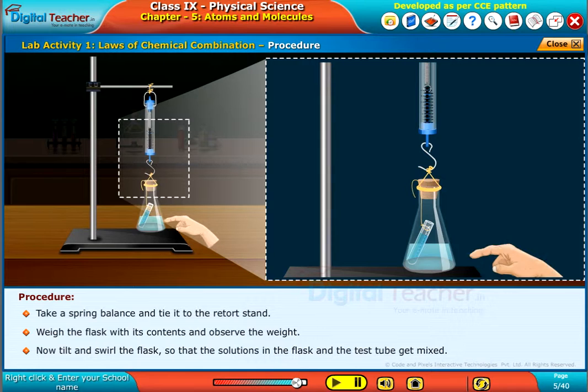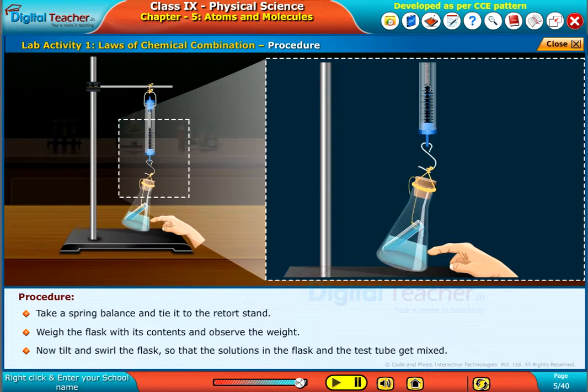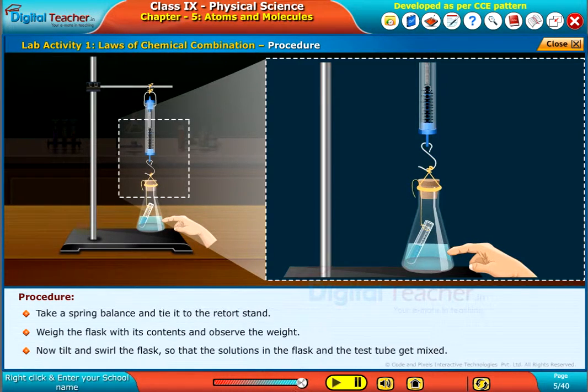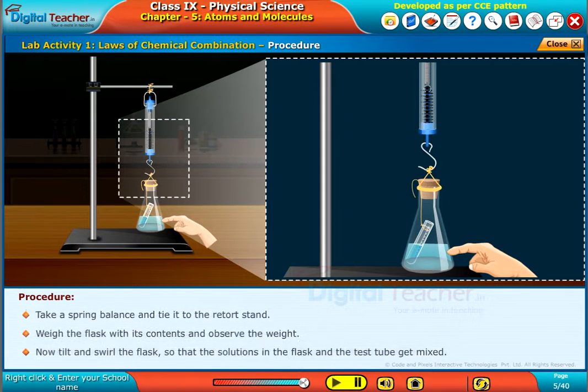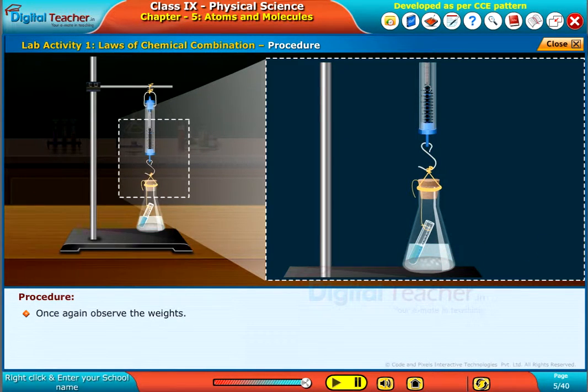Now tilt and swirl the flask so that the solutions in the flask and the test tube get mixed. Once again observe the weights.